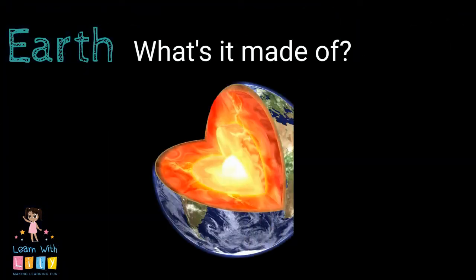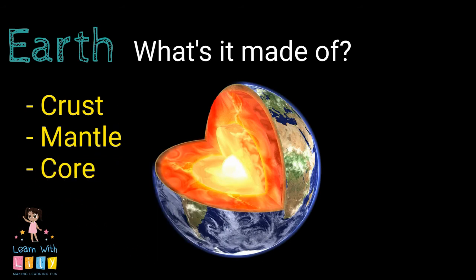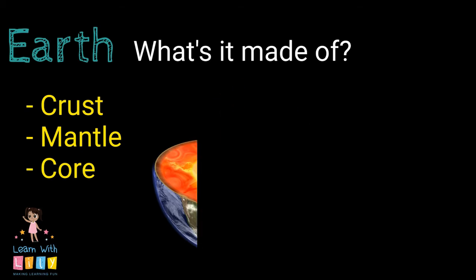What's Earth made of? Our planet Earth is made up of four parts: a crust, a mantle, an outer core, and an inner core. Cool, what are those? Well, they're layers.